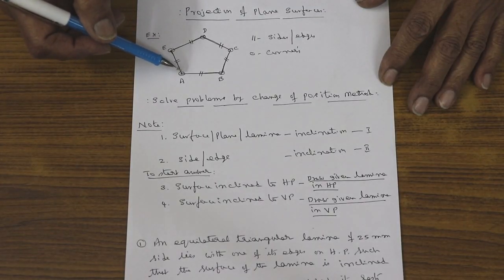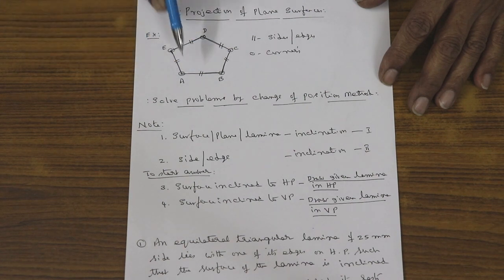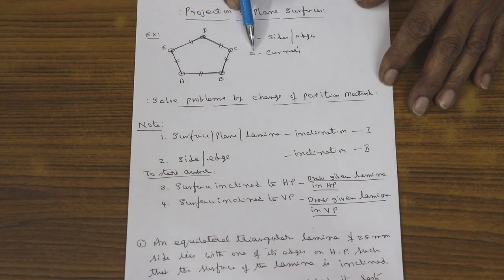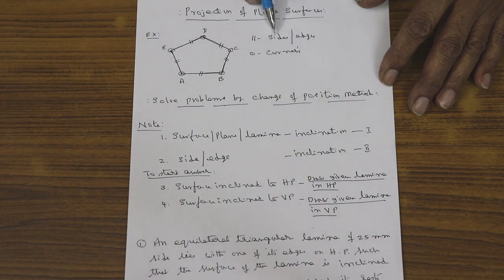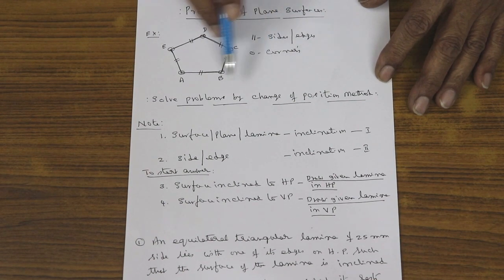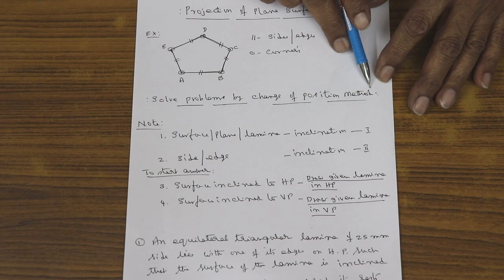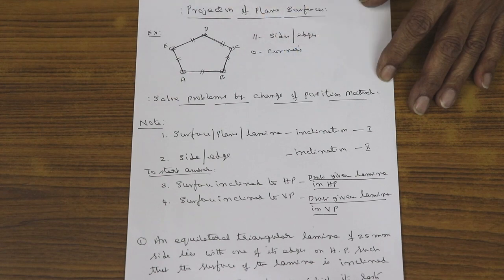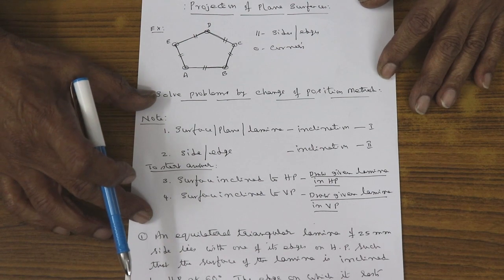Here I have shown a pentagonal lamina with corners A, B, C, D, E. A, B, C are corners whereas A-B, B-C, C-D are sides or edges — side and edge mean the same thing; corner is different. Please keep this in mind. Problems on lamina are solved using what is called the change of position method, which is what we follow as per the syllabus.